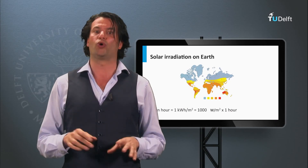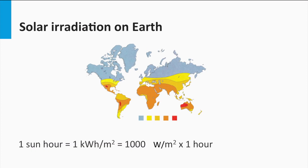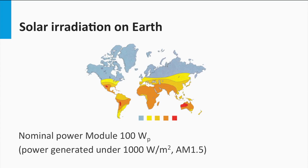The average annual solar irradiance on Earth varies depending on location. A useful tool in expressing local solar irradiance is sun hours. One sun hour equals the energy of one kilowatt hour per square meter — in other words, an Earth's surface exposed for one hour to standard test conditions irradiance of 1000 watts per square meter. This is a handy unit because the performance of solar modules is quantified under standard test conditions. A module with a power of 100 watt peak delivers 100 watts under AM 1.5 solar irradiance of 1000 watts per square meter.